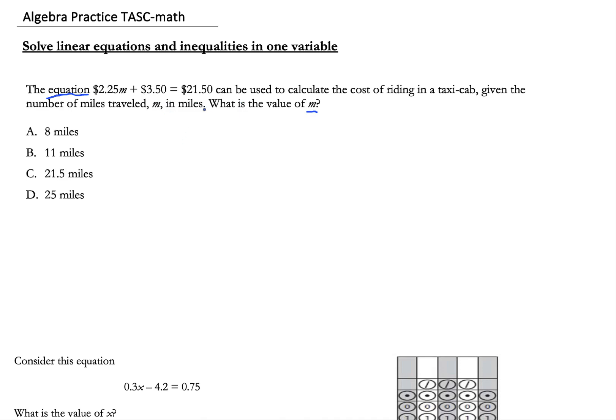Once I see the word equation and then they're asking me to find the value of m, I'm like okay this is just an equation. So my equation is $2.25m plus $3.50 equals $21.50. A lot of my students get scared because they see decimals, but check out I have a video on adding, subtracting, multiplying and dividing decimals if you need a refresher.